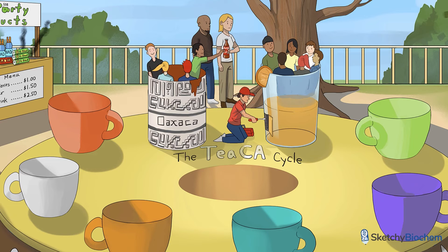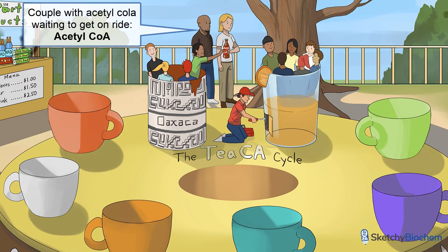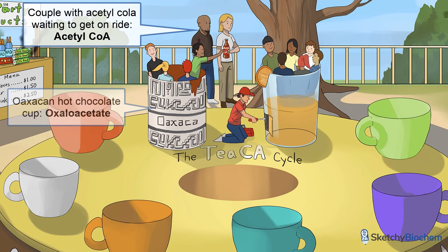You'll see a young couple patiently waiting to get on the ride. One of them is holding a bottle of acetyl-Cola. They represent acetyl-CoA, which has 2 carbons, hence 2 people. They want to get on that Oaxacan hot chocolate cup — oxaloacetate, that is. Citrate is the first intermediate produced during the TCA cycle.